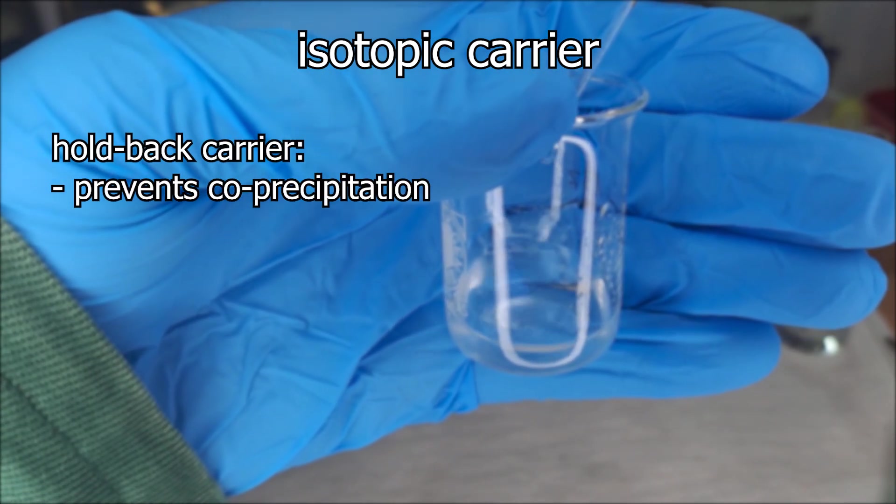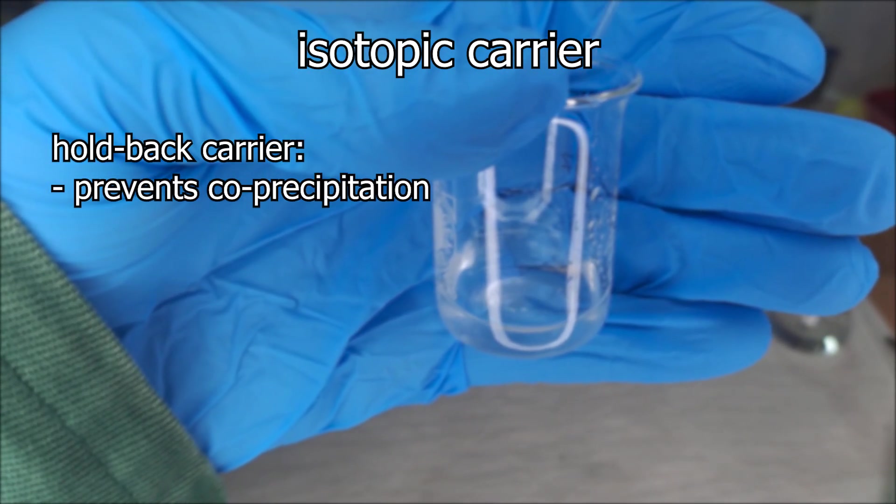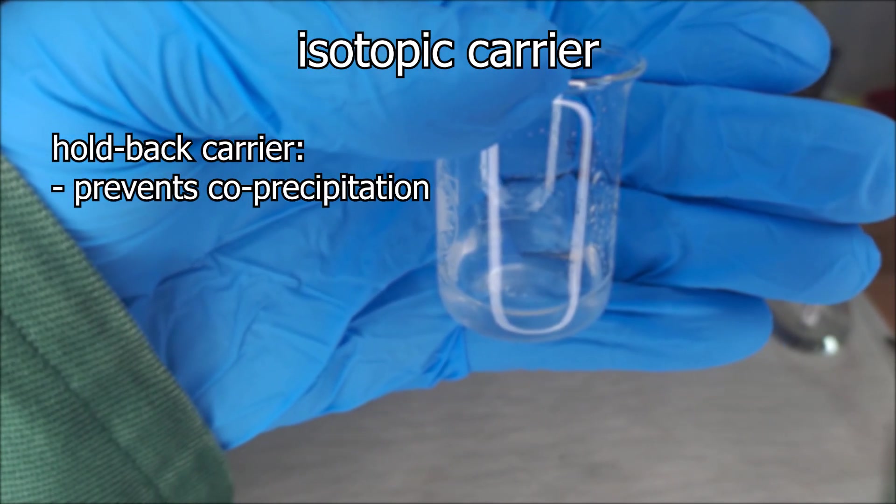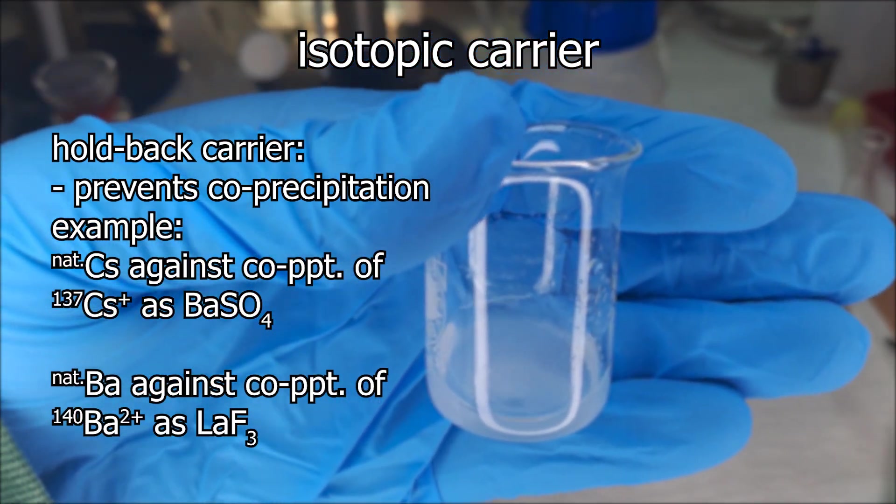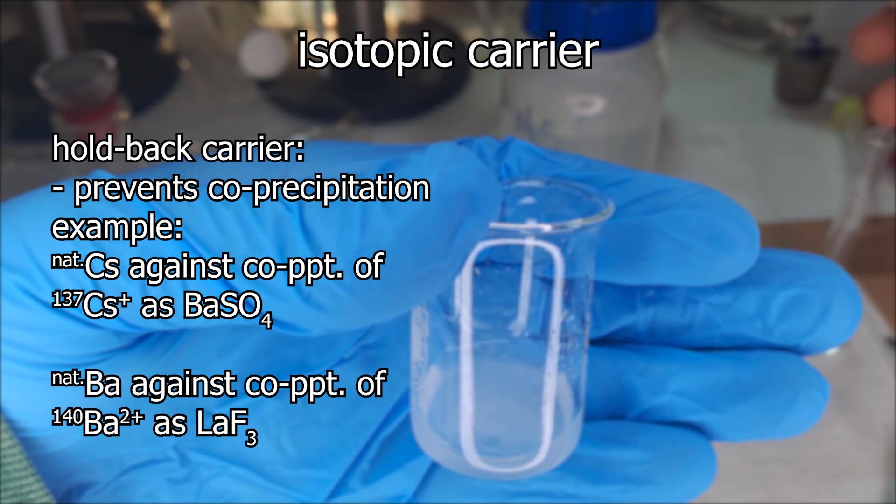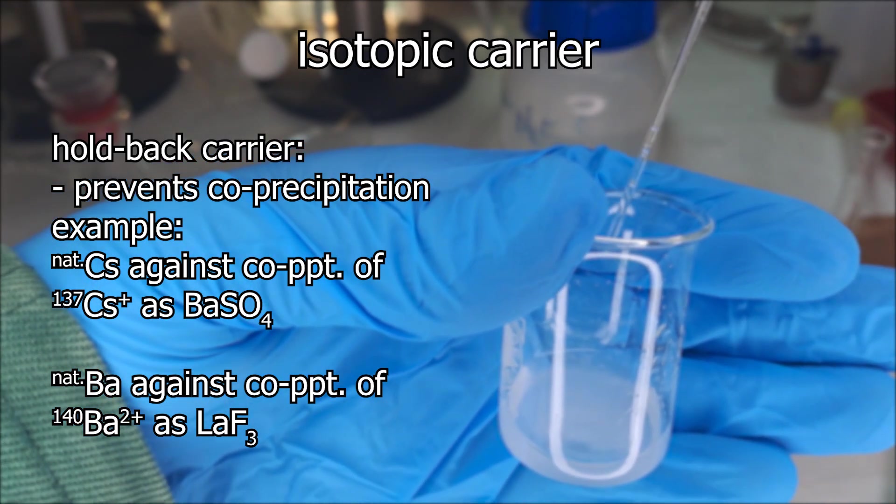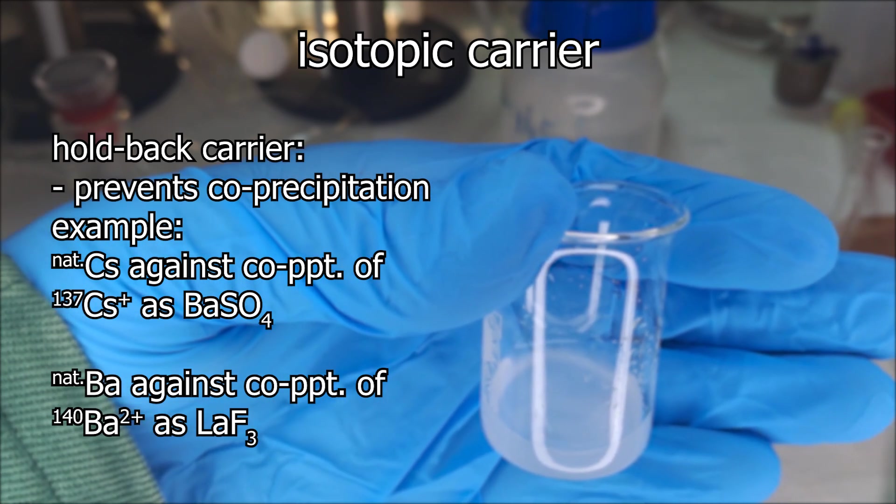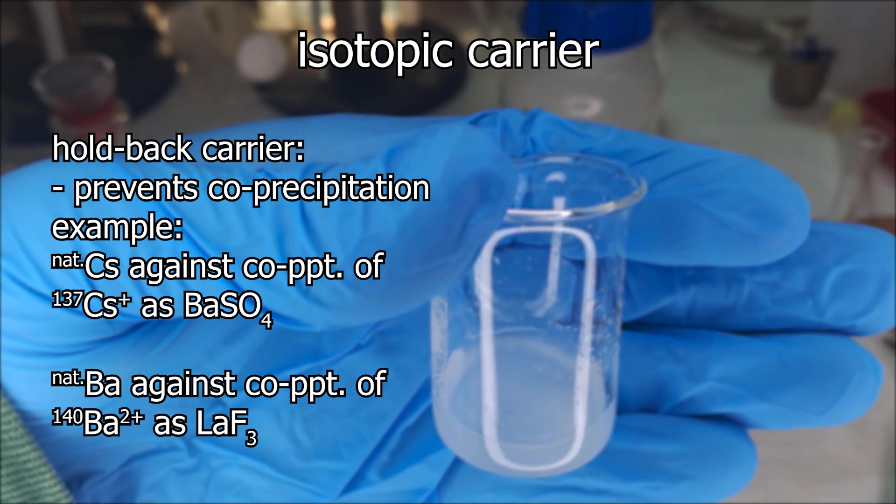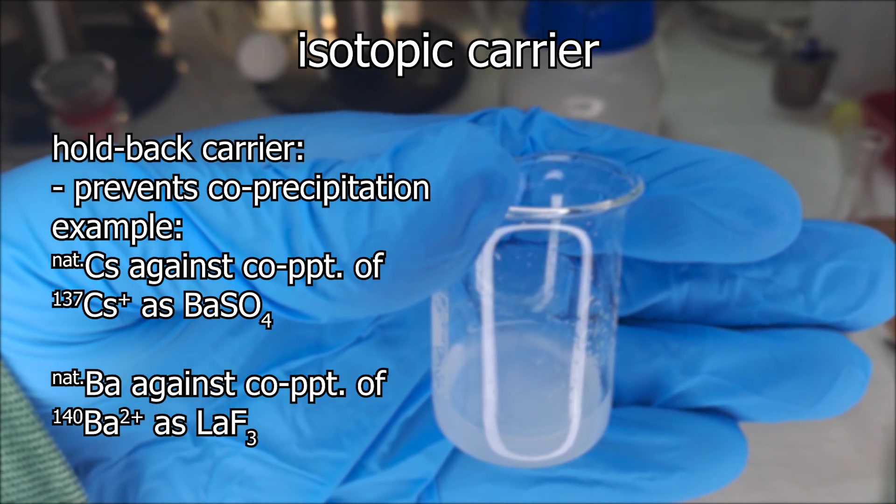Sometimes co-precipitation is not desired and a so-called holdback carrier is used. For example, when radium-barium is precipitated out by lanthanum fluoride. The stable barium is added since barium fluoride does not actually precipitate in this way. And thanks to the stable barium, this does not happen and the radiobarium stays in solution.